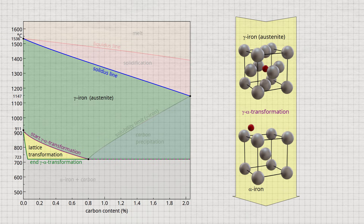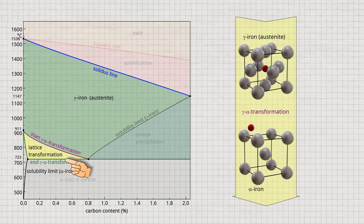The body-centered cubic lattice structure of alpha-iron is therefore hardly able to dissolve carbon. The black line in the phase diagram marks the maximum solubility of carbon in alpha-iron. Similarly, the solubility limit already explained marks the maximum solubility of carbon in gamma-iron.